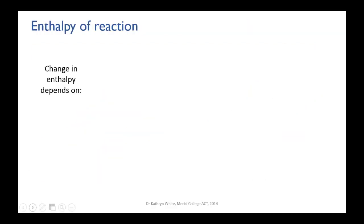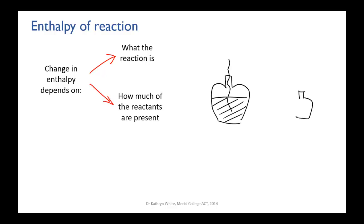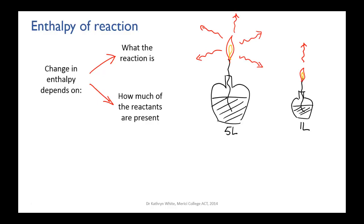The actual value of the change in enthalpy depends on what the reaction is, but it also depends on how much of the chemicals react. For instance, if you burn 5 litres of fuel, you will get 5 times as much heat out as if you burnt 1 litre. So when we talk about enthalpies, we need to take into account how much of the reactants have been used.